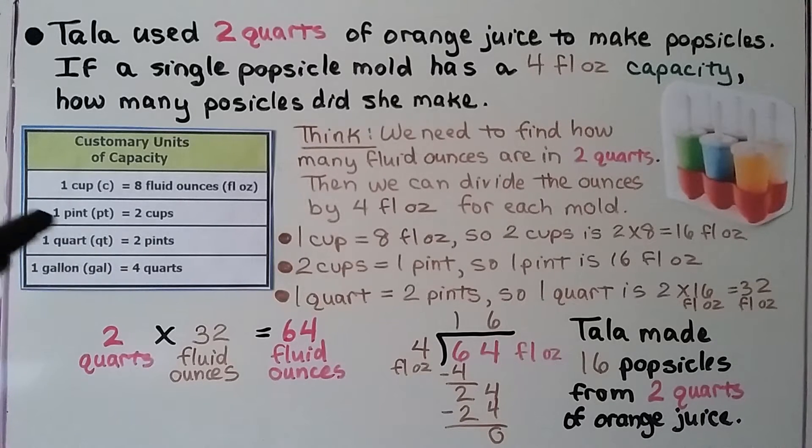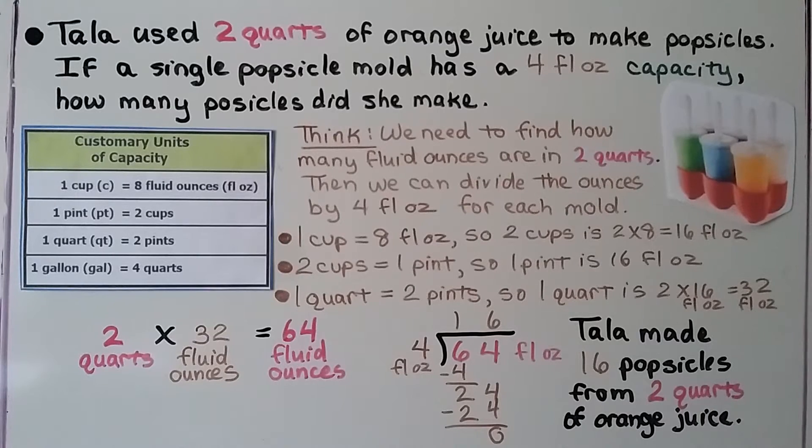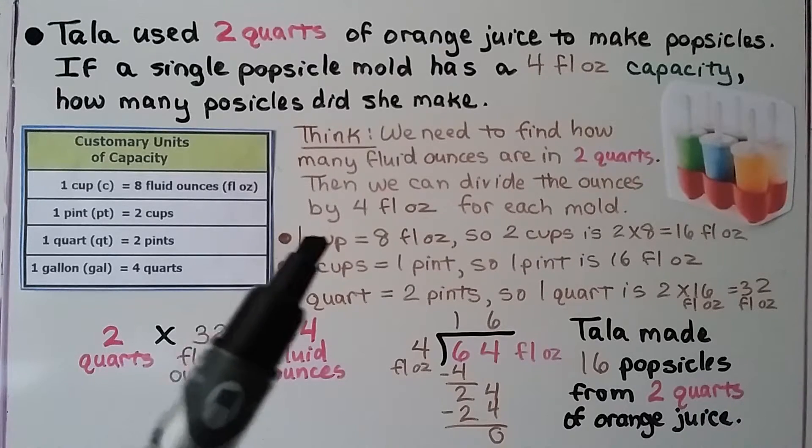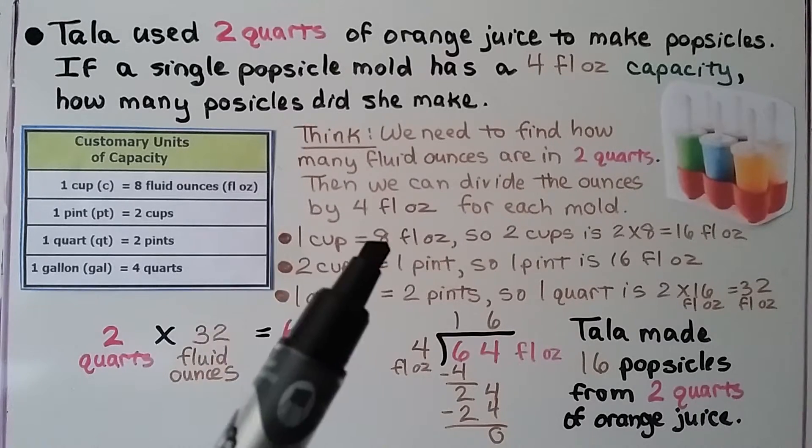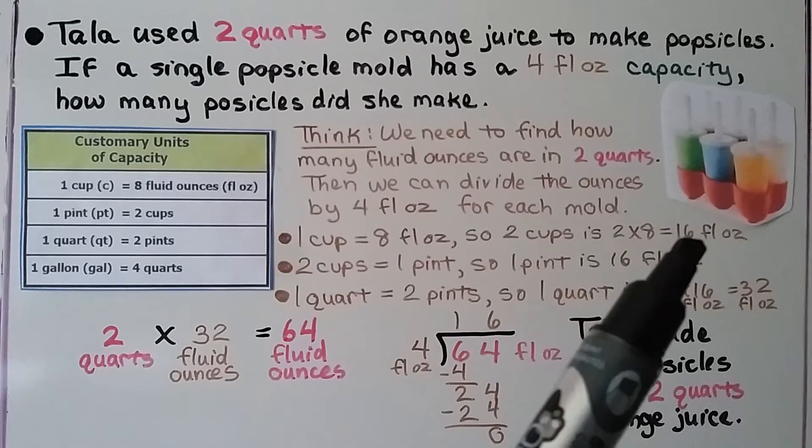Here's one quart, that's two pints. And one pint is two cups. And one cup is eight fluid ounces. So one cup is eight fluid ounces. So two cups is two times eight fluid ounces. That's 16 fluid ounces.